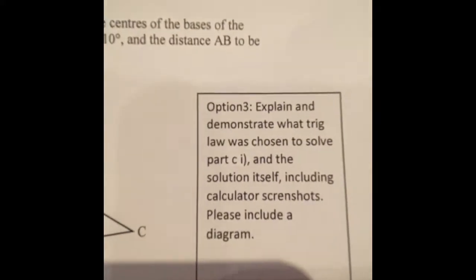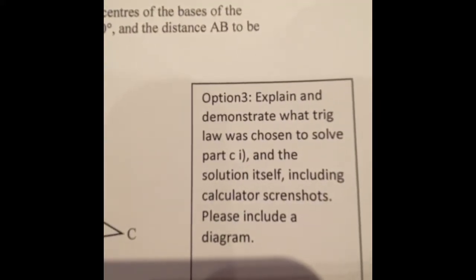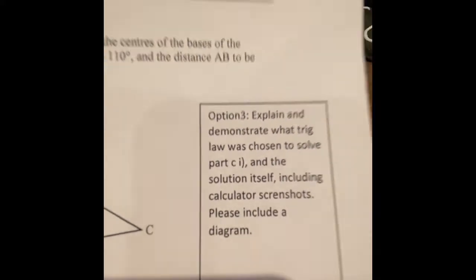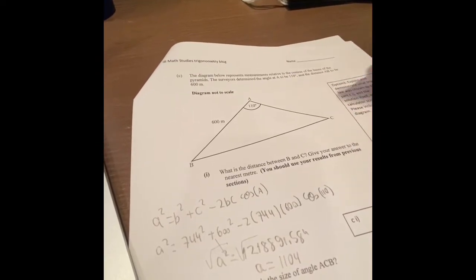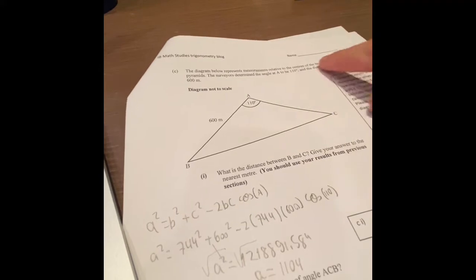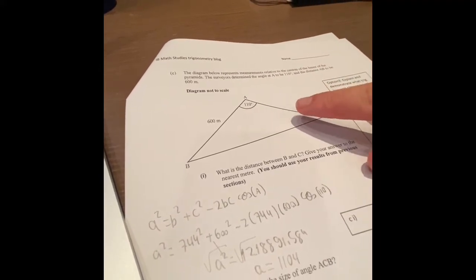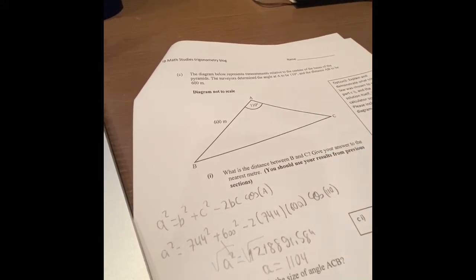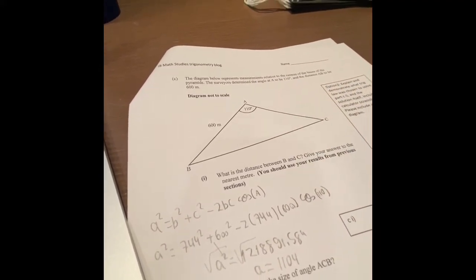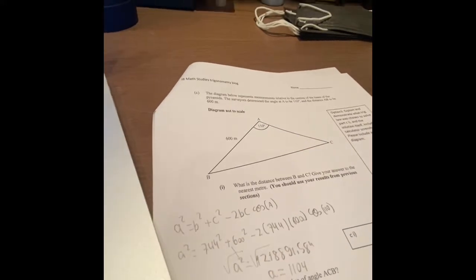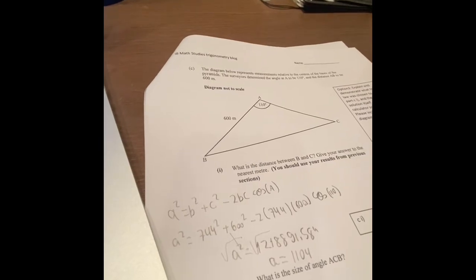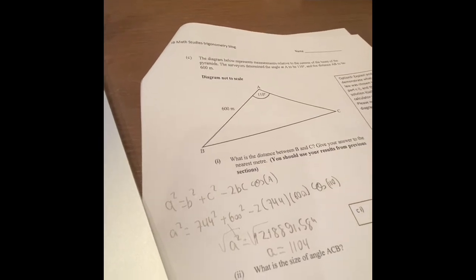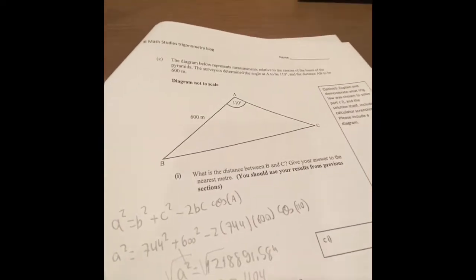So explain and demonstrate what trig law was chosen to solve part C1. So for part C, we're given a pyramid — a triangle — with this information here, which is angle A is 110 degrees and the distance between A and B is 600. For part C1, what is the distance between B and C? Give your answer to the nearest meter.